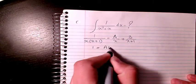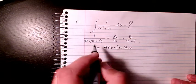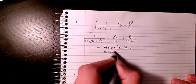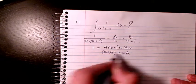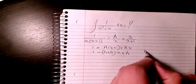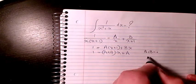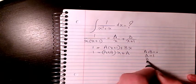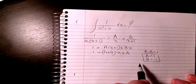be A times (x plus 1) plus B times x. So A plus Bx plus A equals 1. This means that A plus B is 0 and A will be 1, so B will be negative 1.